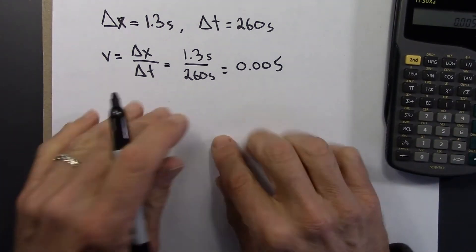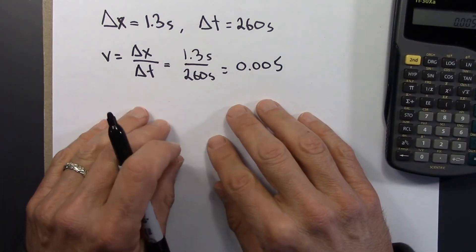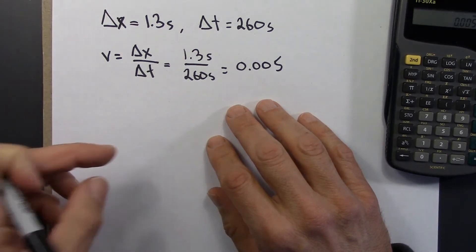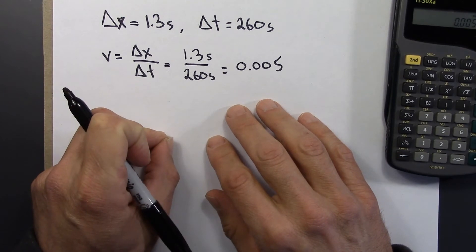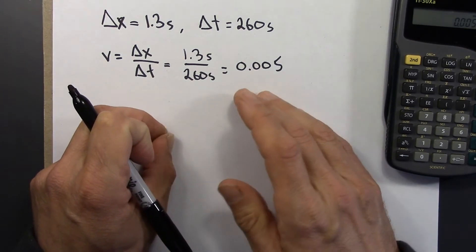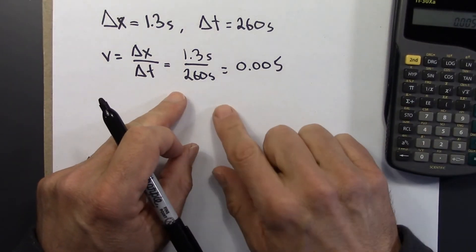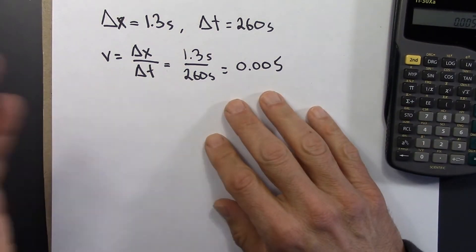Alright, so the second part of the question is asking us to look at how long the train trip takes from the point of view of a clock on the train. So that would be a proper time. It actually might be the space time interval if it goes in a straight line, which presumably it would.